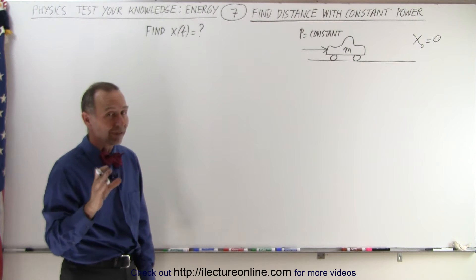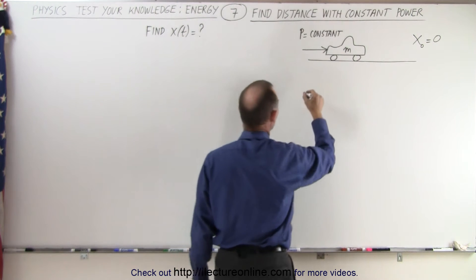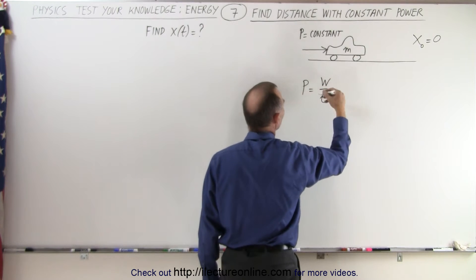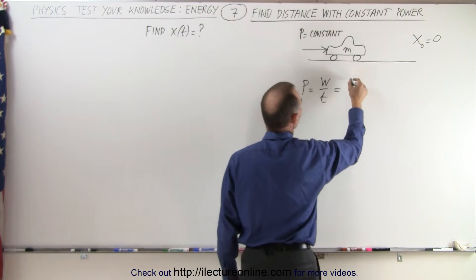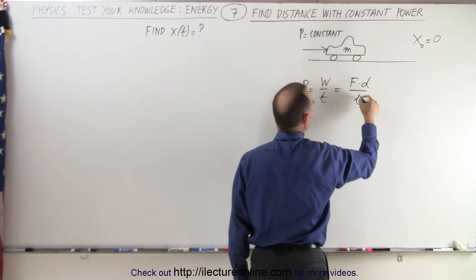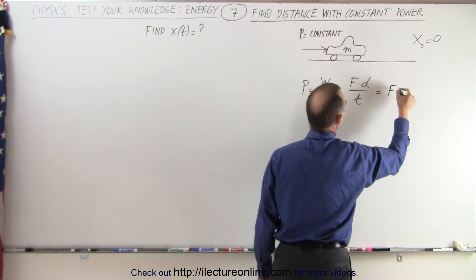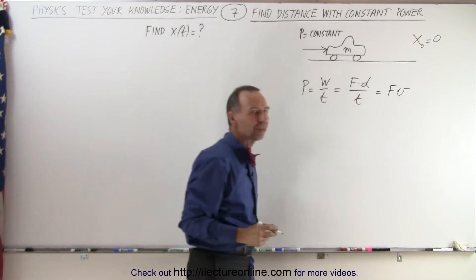Let's start with the definition of power. Power by definition is equal to work divided by time, and work can be defined by force times distance over time, and of course distance over time is equal to velocity, so power is equal to force times velocity.